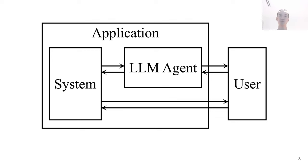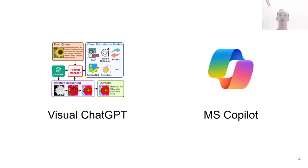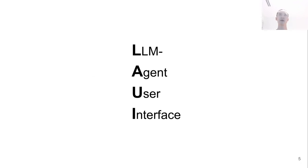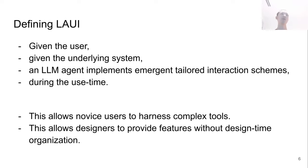But if this is all you do, it's only a small patch to our existing way of doing things. Neither example here scratches the surface of what's possible with LAWI. LAWI stands for LLM, Agent, User Interface — a new avenue of UI research that we are putting forward with our position paper. As an overview, in LAWI, given the user and the underlying system, an LLM agent implements emerging tailored interaction schemes during the use time. Consequently, this allows novice users to harness complex tools, and allows designers to provide features without design-time organization.